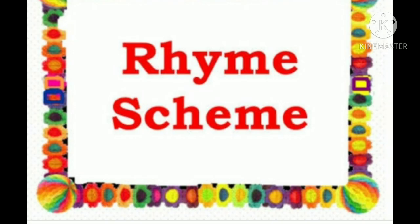Now let's do the rhyme scheme. Rhyme scheme refers to the similarity or sameness of the last word sound in the lines of a poem. For example: 'say' and 'day' have the same sound. We look at the last word of each line in a poem and check which sounds match with which.